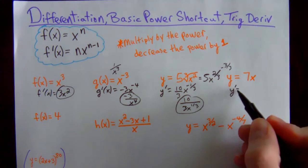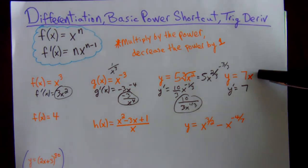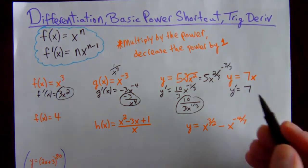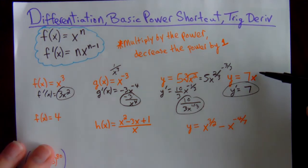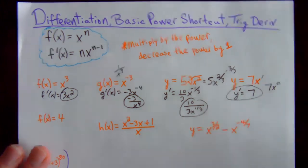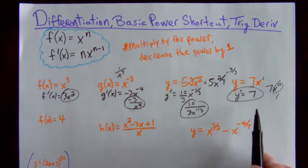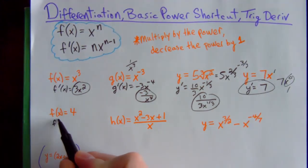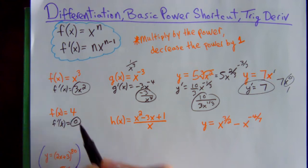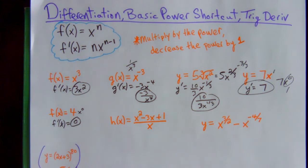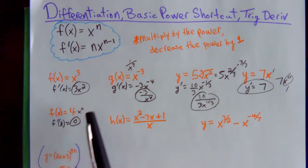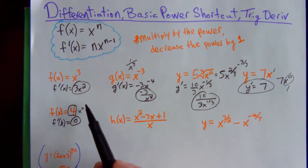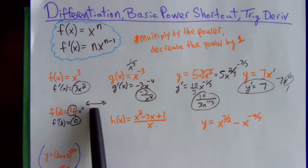The derivative of 7x is just 7, for a couple of reasons. First, it's a linear function with slope 7, and derivative equals slope. Also, using the power shortcut: 7x is 7 times x to the first, multiply by the power to get 7, decrease the power by 1 to get x to the 0, which equals 1, so 7 times 1 is 7. In general, the derivative of a constant times x is just that constant. The derivative of a plain constant like 4 is 0 — because y equals 4 is a horizontal line with slope 0.